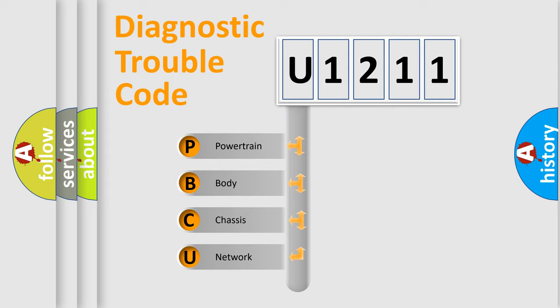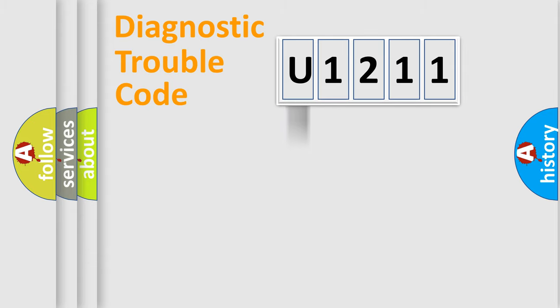We divide the electric system of automobile into four basic units: Powertrain, Body, Chassis, and Network. This distribution is defined in the first character code.